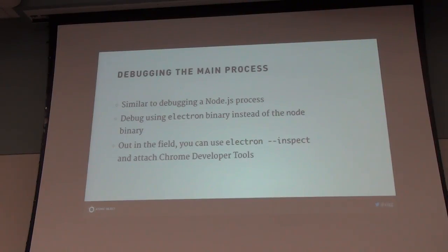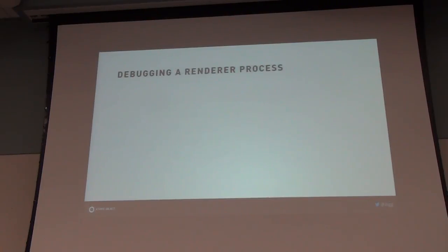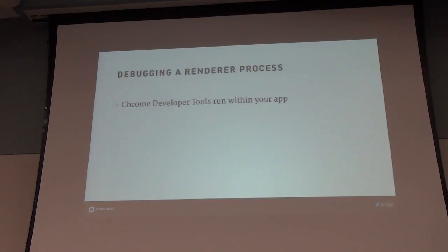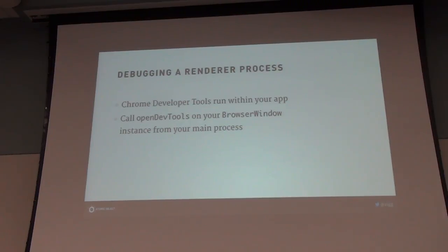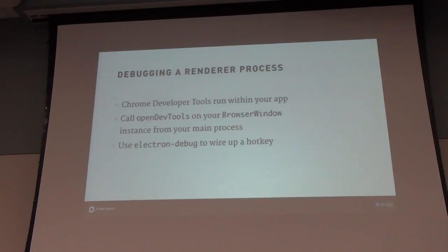The renderer process is not quite as convenient in one way but more convenient in another. The Chrome developer tools are just there inside your application. Inside a normal Electron application they're inaccessible — you don't have a shortcut key to turn them on. But you do have an API you can call. For the first four or five months we just opened the developer tools every time we ran the app. As we came closer to release, we installed a package called Electron Debug, which gives a global hotkey to bring up the debug console without bothering people with it otherwise.